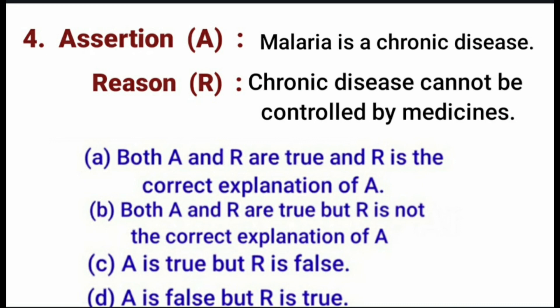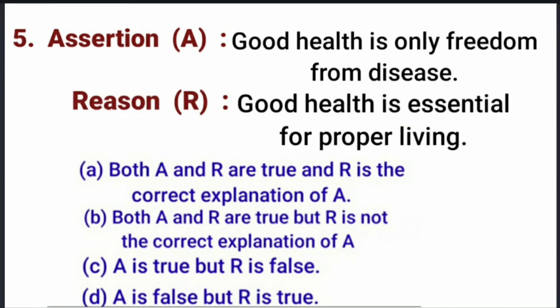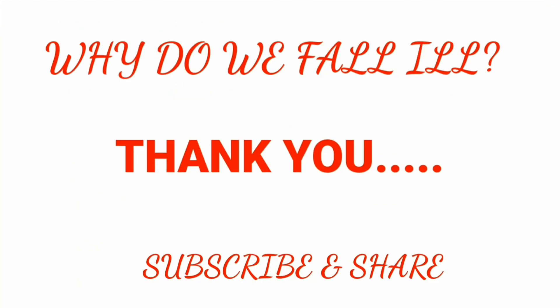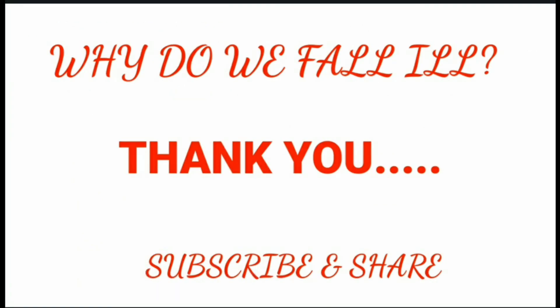Question 4 — Assertion: Malaria is a chronic disease. Reason: Chronic disease cannot be controlled by medicines. Answer: Option C — Assertion is true but reason is false, because chronic disease can be controlled by medicines. Question 5 — Assertion: Good health is only freedom from disease. Reason: Good health is essential for proper living. Answer: Option D — Assertion is false but reason is true. Students, here is the end of the chapter. Please subscribe and share this video. Thank you and have a nice day.